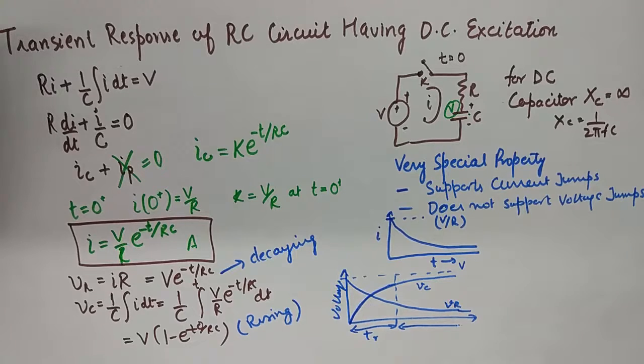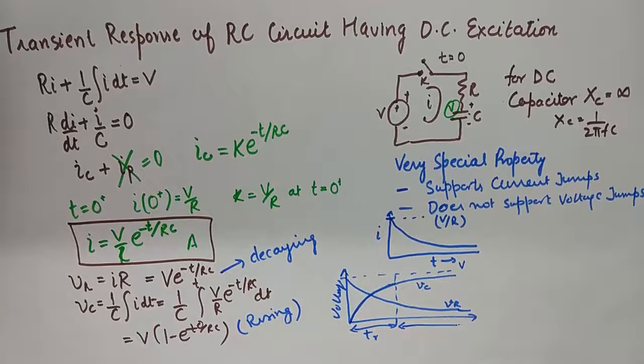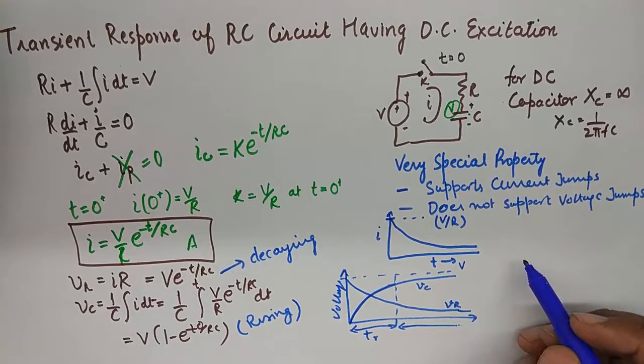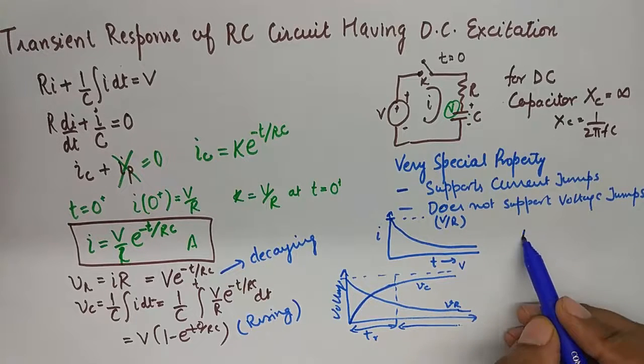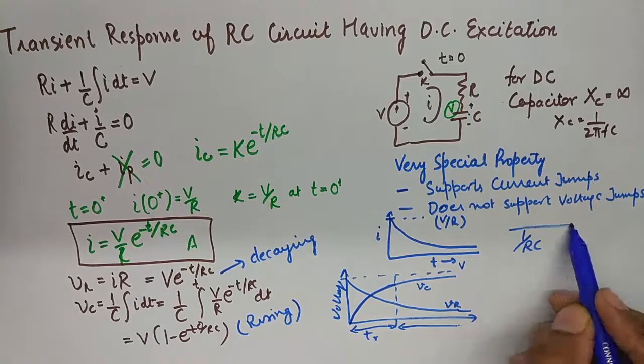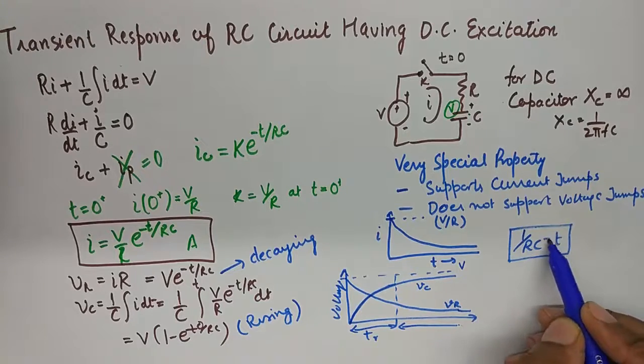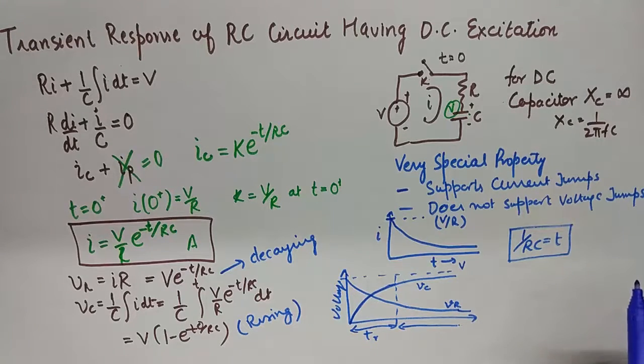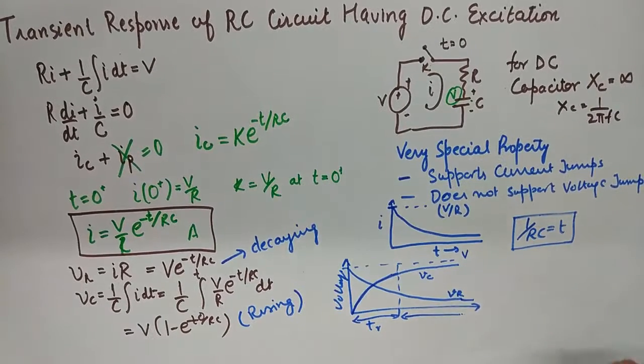And when you do that you will get the time constant value for capacitor. 1/RC becomes the time constant of the RC circuit with the DC excitation.